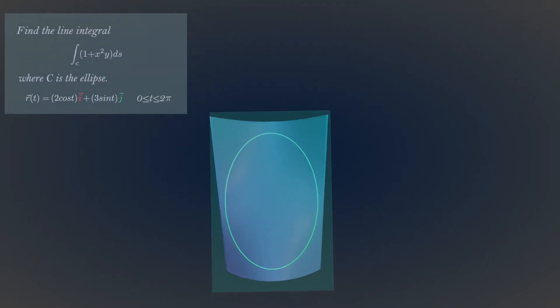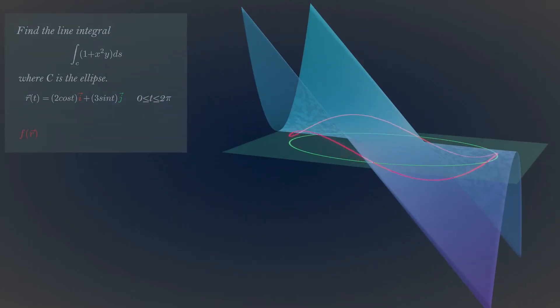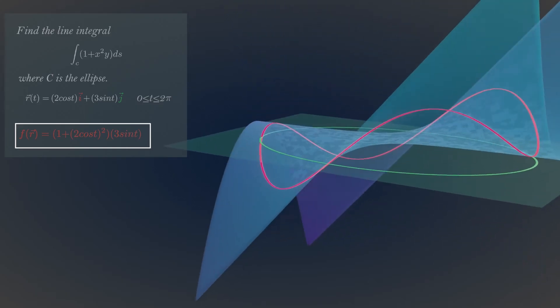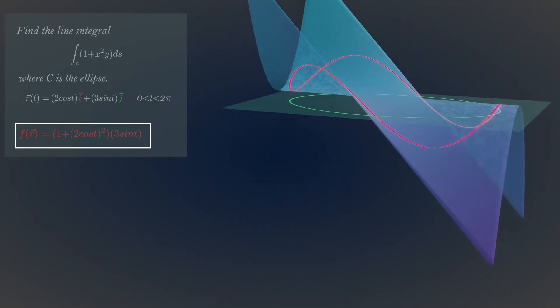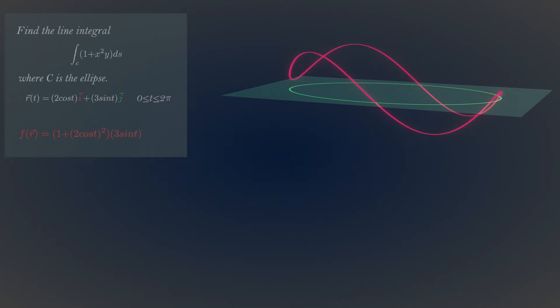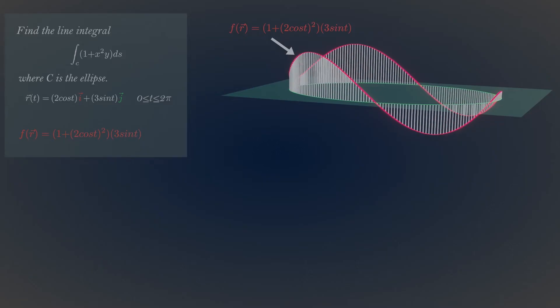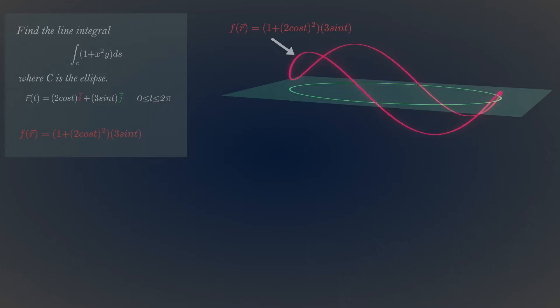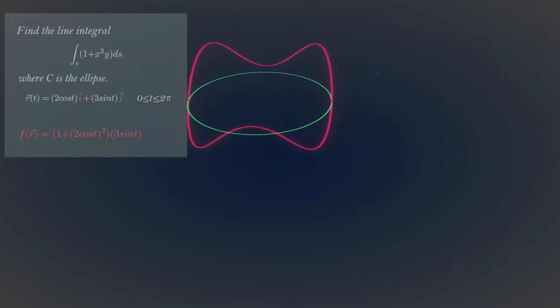First, we need to project our ellipse over the surface. Now, the height of the stick is given by this parametrized function. Now, we don't want the surface, let's remove it. Evaluating this line integral is like adding sticks along the path of the ellipse that has height generated by this parametrized function. You can convert this problem into this.